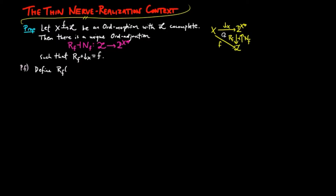For the proof, define Rf on a down-directed set E as a supremum of f(x) where x is in E, and Nf on an element l in the order L as a set x in X such that f of x is less than or equal to l.